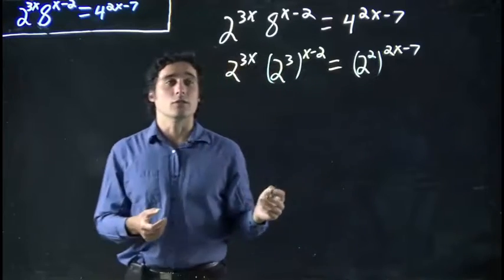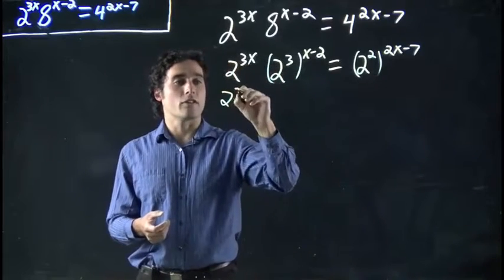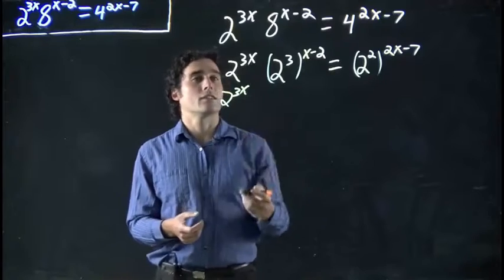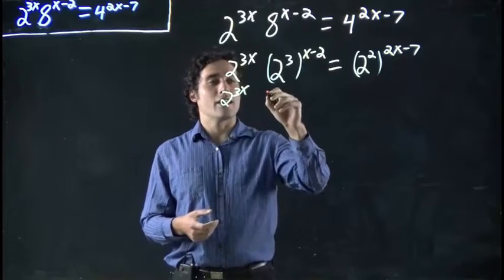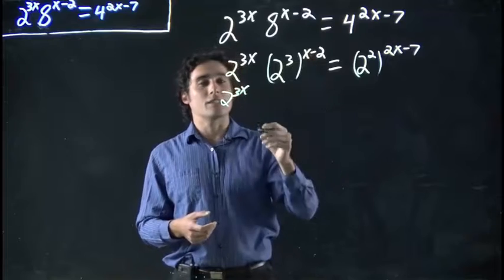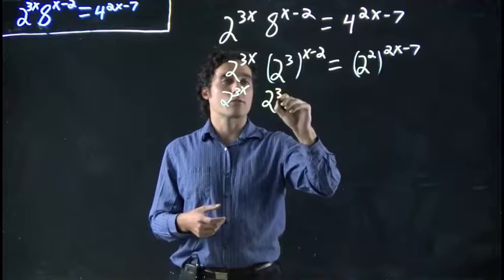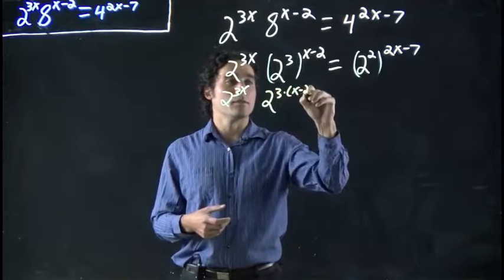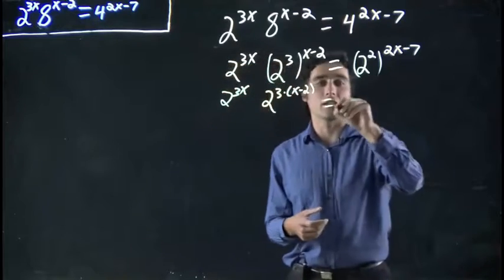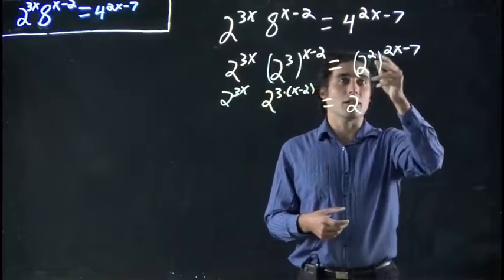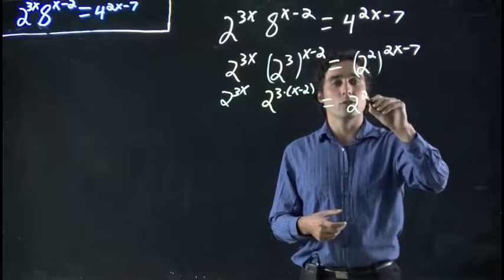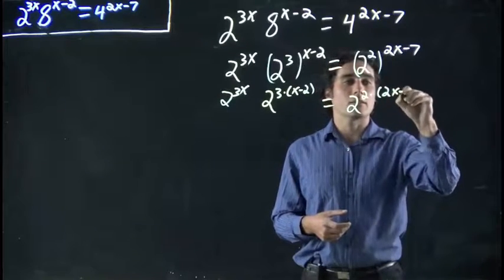Now we're just applying the exponentials. So go through it very methodically. 2 to 3x stays the same. 2 to 3x. Now this, remember, an exponent raised to the power of an exponent, they multiply. So we get 2 and 3 times x minus 2. And we're going to do the same kind of thing on this side, where this exponent is multiplied by that. So 2 times 2x minus 7.